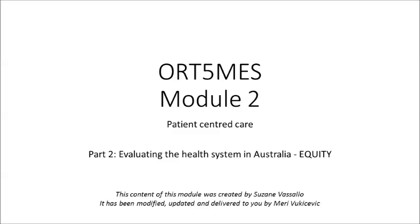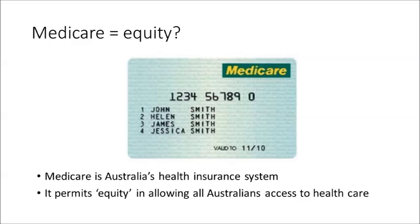Welcome to part 2 of module 2, where we will be looking at equity in terms of evaluating the health system in Australia. You should now have a good understanding of the Australian public health system under Medicare from module 1. We are going to start by looking at Medicare more critically in module 2. Medicare is Australia's health insurance system and it permits equity in allowing Australians access to health care.